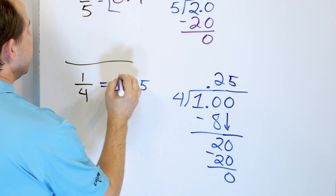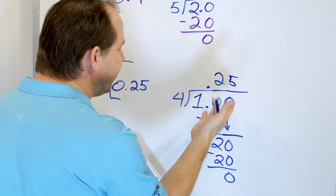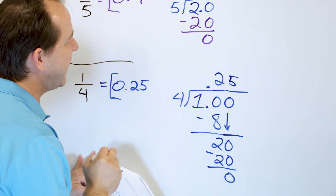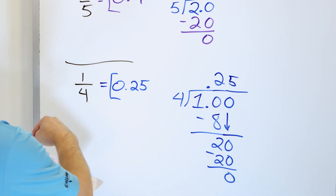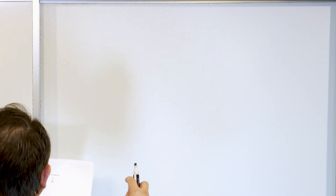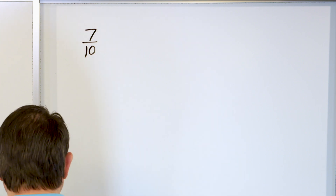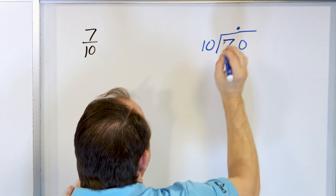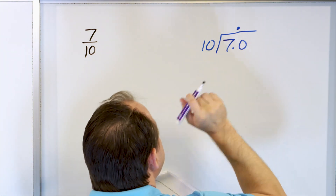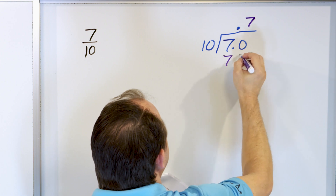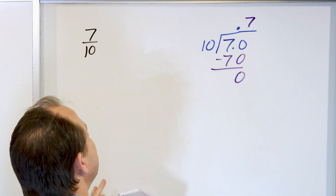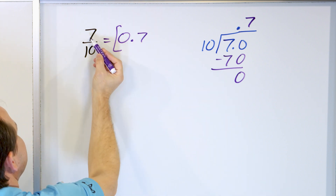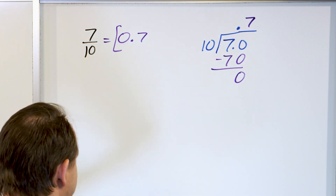In division, after subtracting you drag down the next digit. If there is no next digit after the decimal, you can add a zero and drag that down. Now let's look at seven tenths. We take seven and divide by 10, making it 7.0. Ten times seven is 70 — subtract, 70 minus 70 is zero, so we stop. The result is 0.7, which makes sense: dividing by 10 moves the decimal one spot to the left.